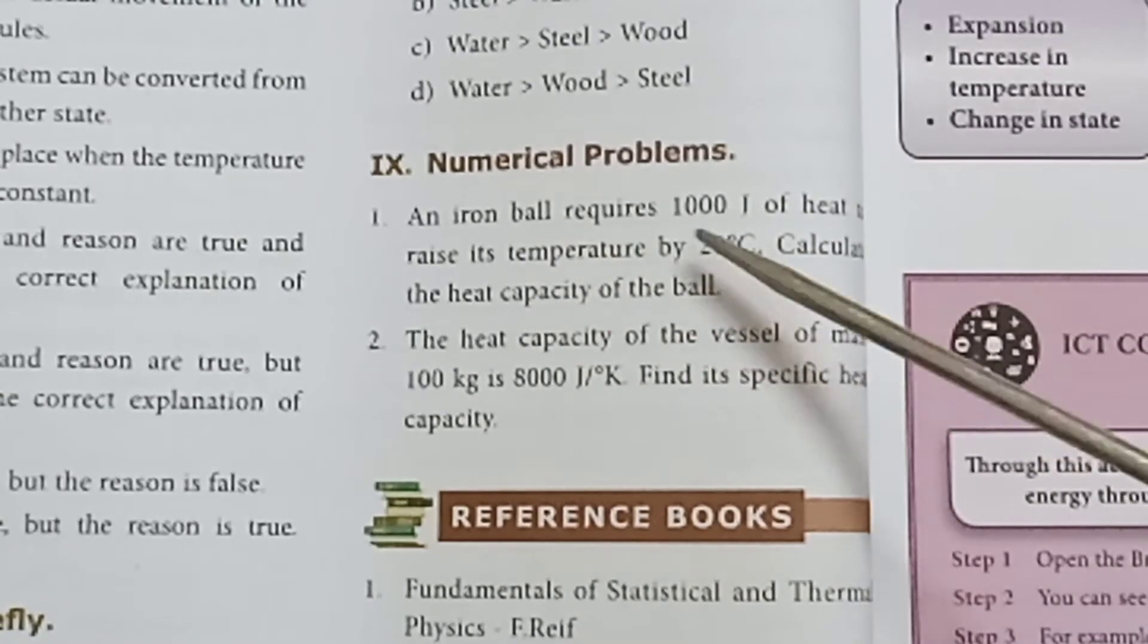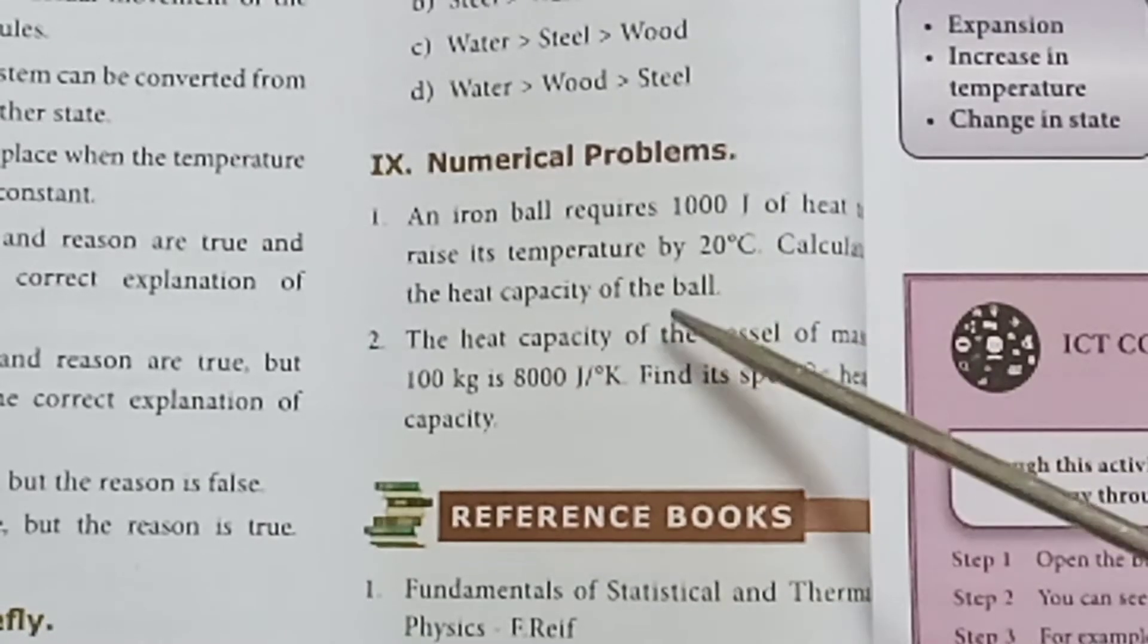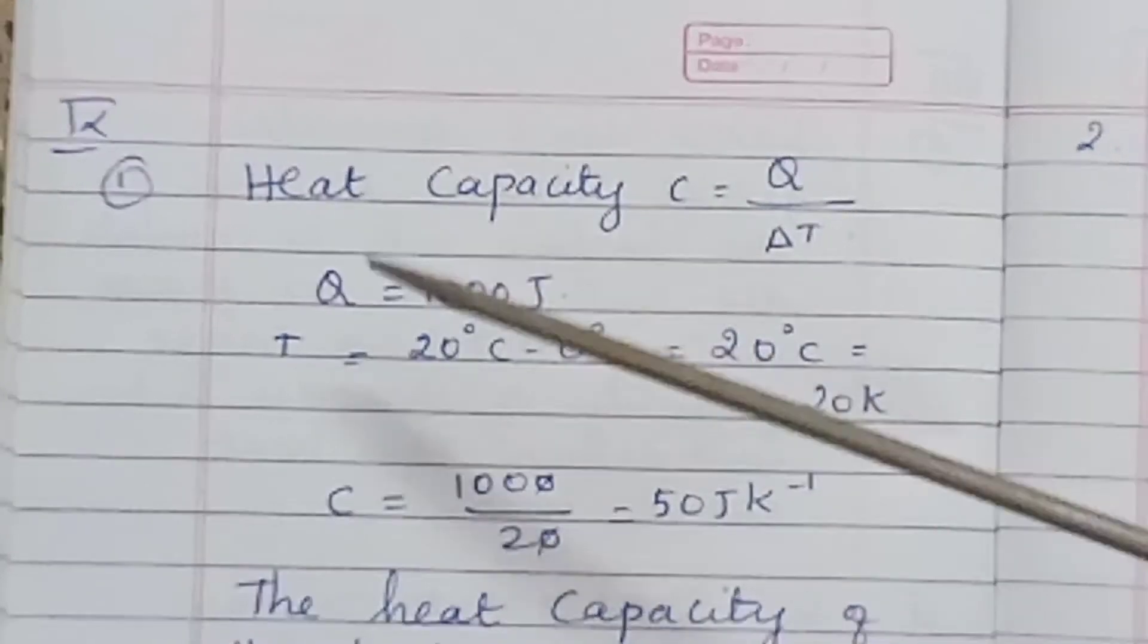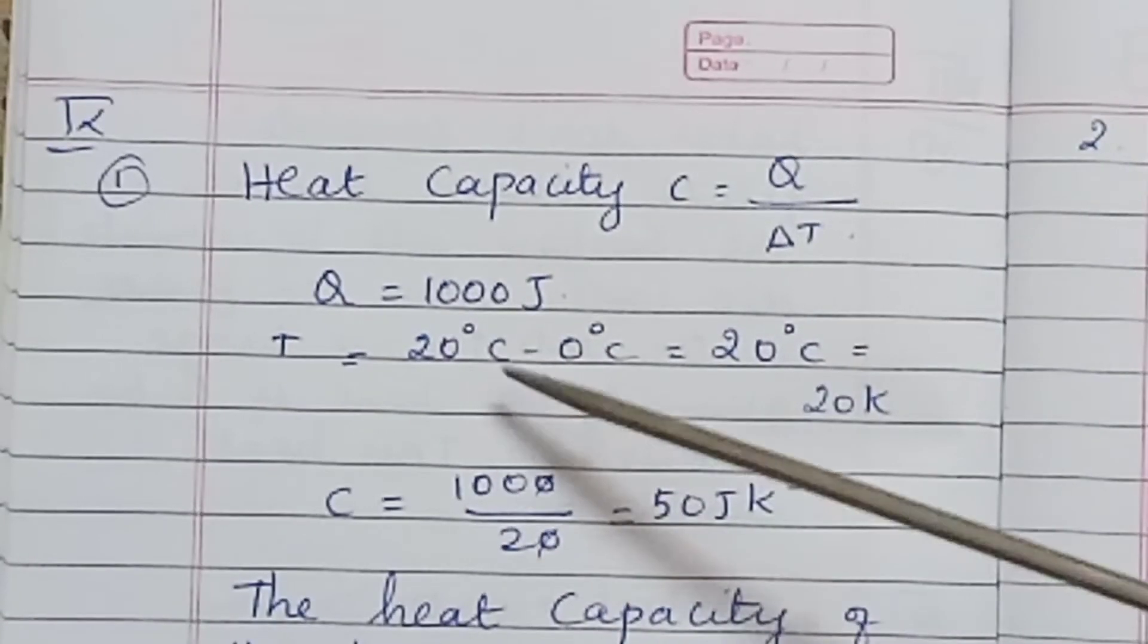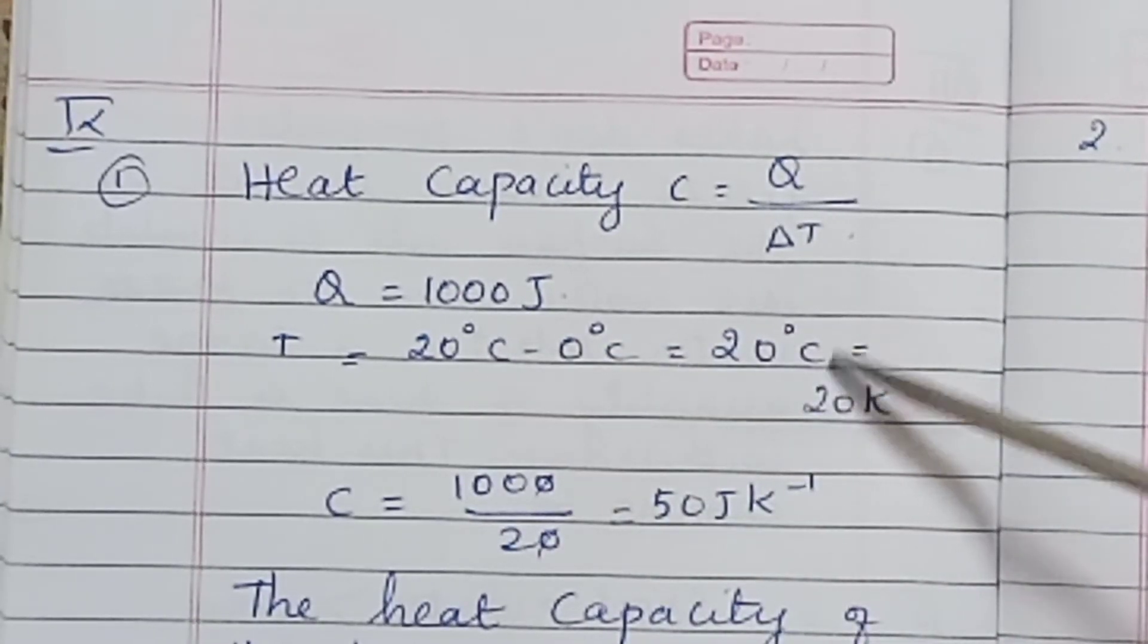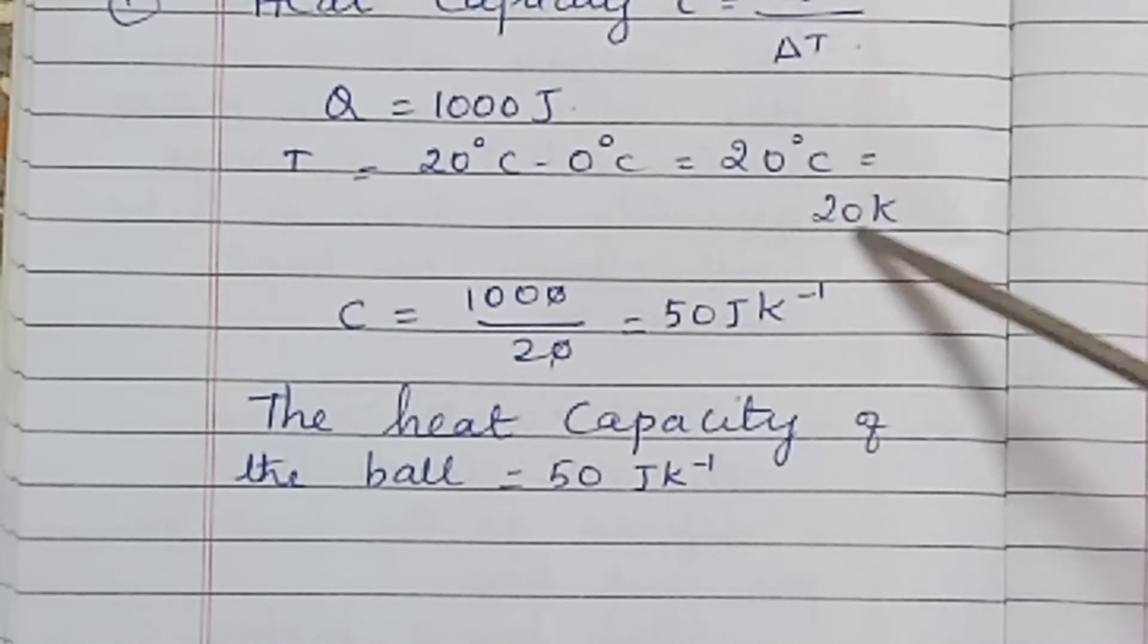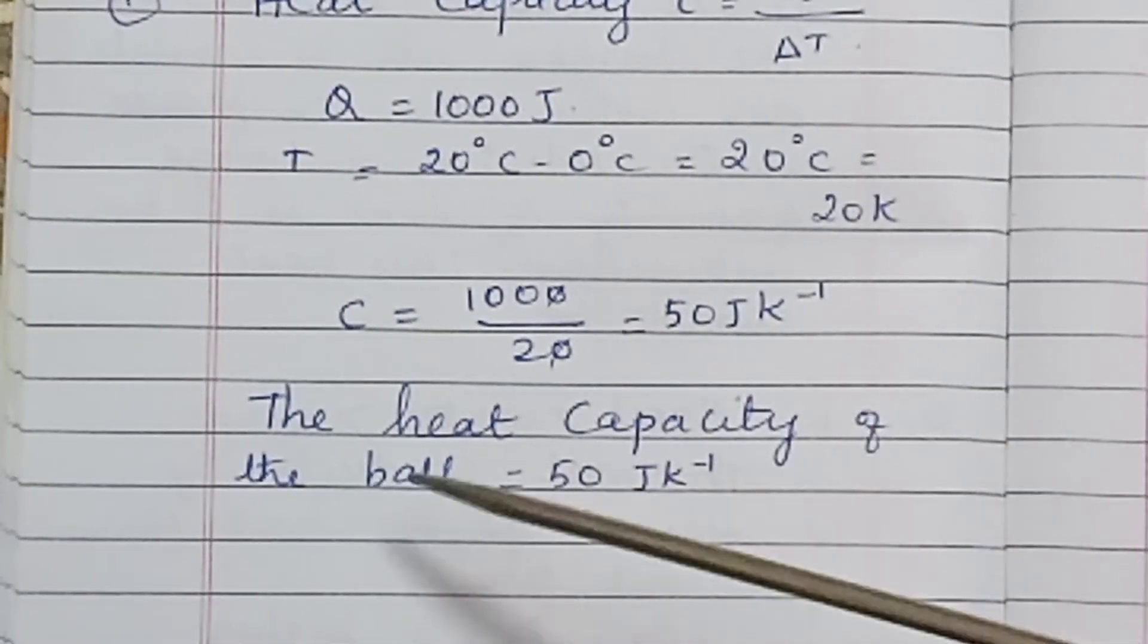Number 9: Numerical problems. An iron ball requires 1000 joules of heat to raise its temperature by 20 degrees Celsius. Calculate the heat capacity of the ball. Heat capacity C = Q / ΔT. Q = 1000 joules, ΔT = 20 degrees Celsius - 0 degrees Celsius = 20 Kelvin. C = 1000 / 20. The answer is 50 Joule Kelvin^-1. The heat capacity of the ball is 50 J K^-1.